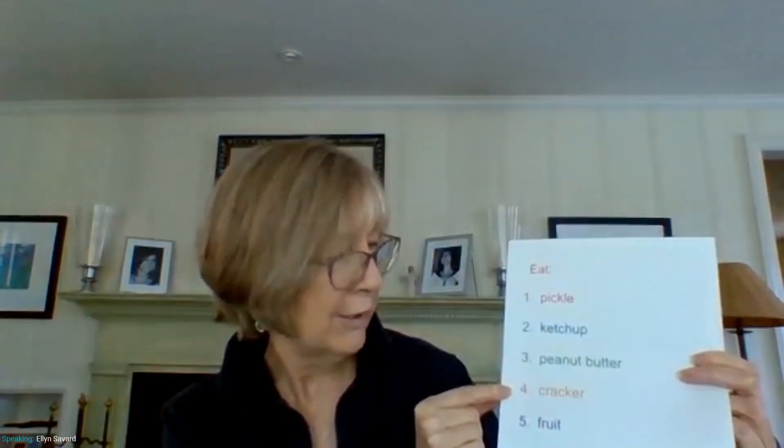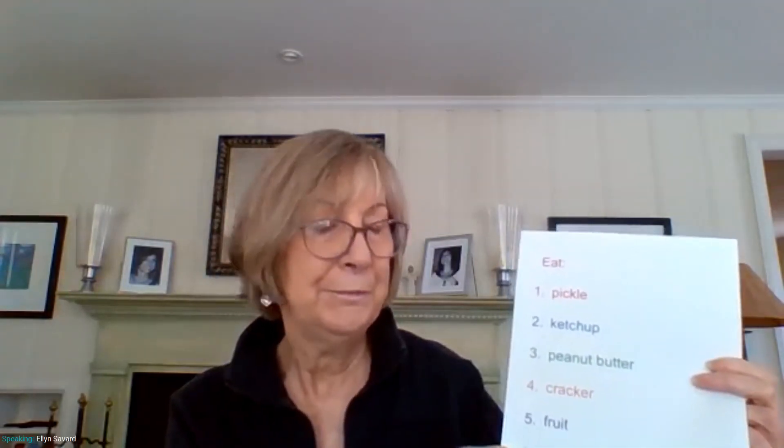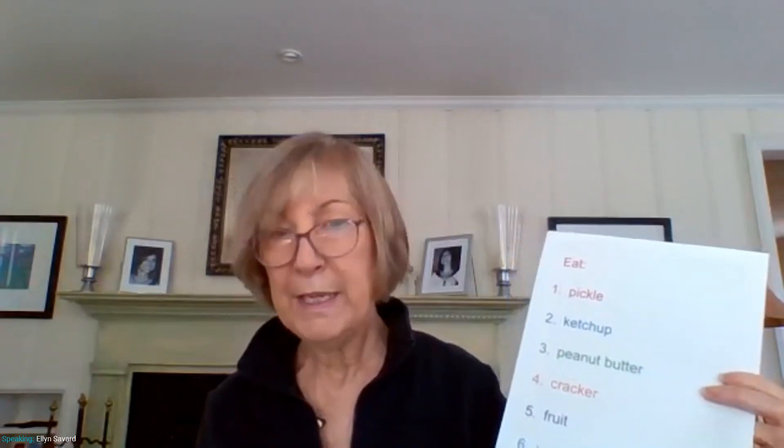So the first one is pickle. Two: ketchup. Three: peanut butter. Four: cracker. Five: fruit — and my fruit of choice is raspberry. Six: vegetable — it could be any vegetable; for me, maybe a carrot. So I'm going to roll my die.